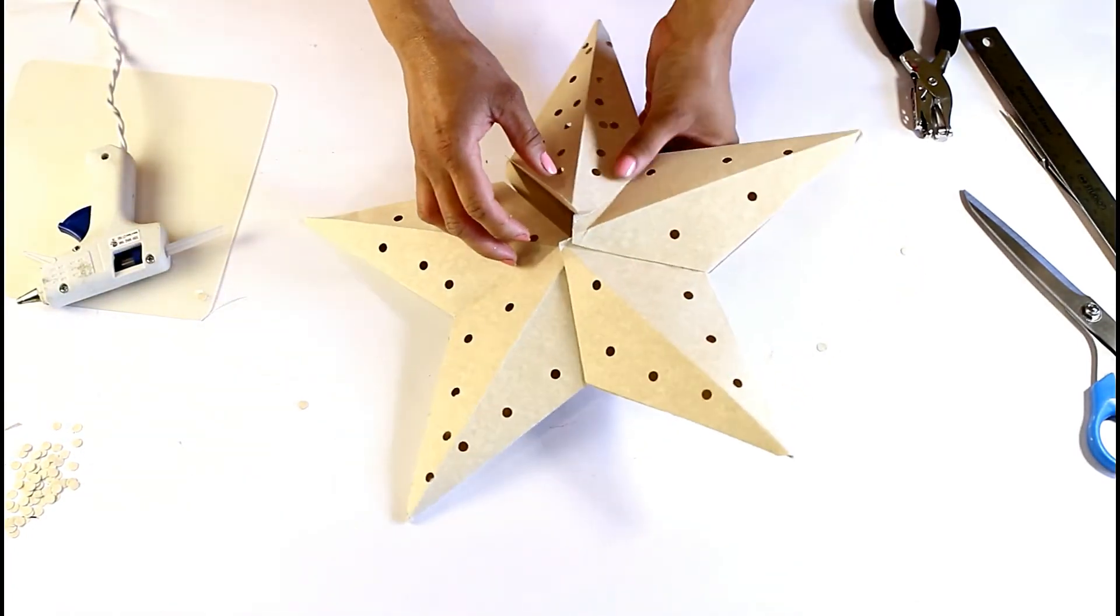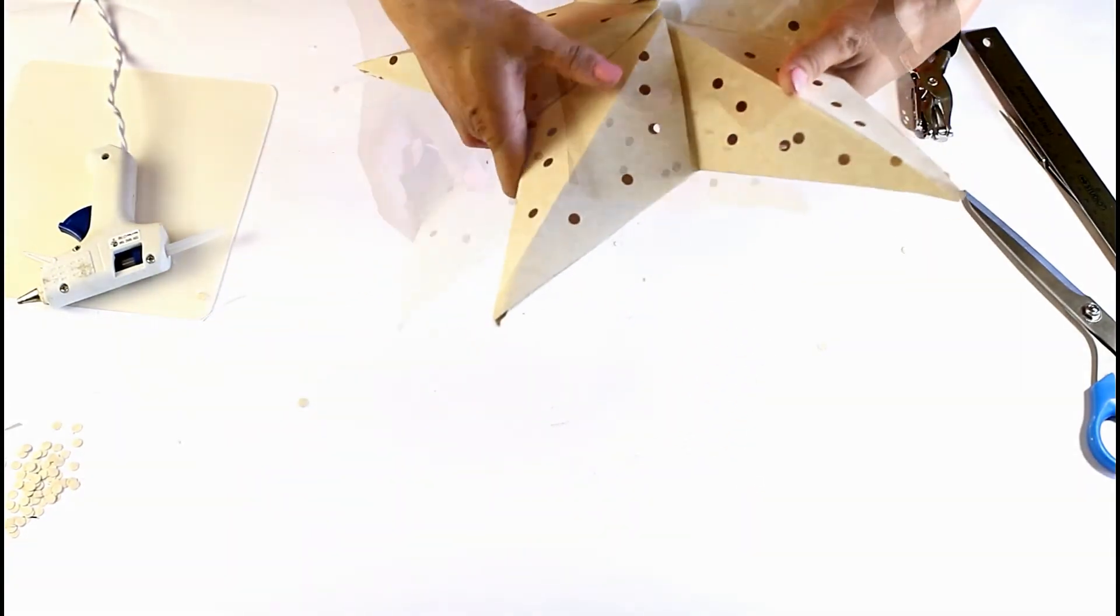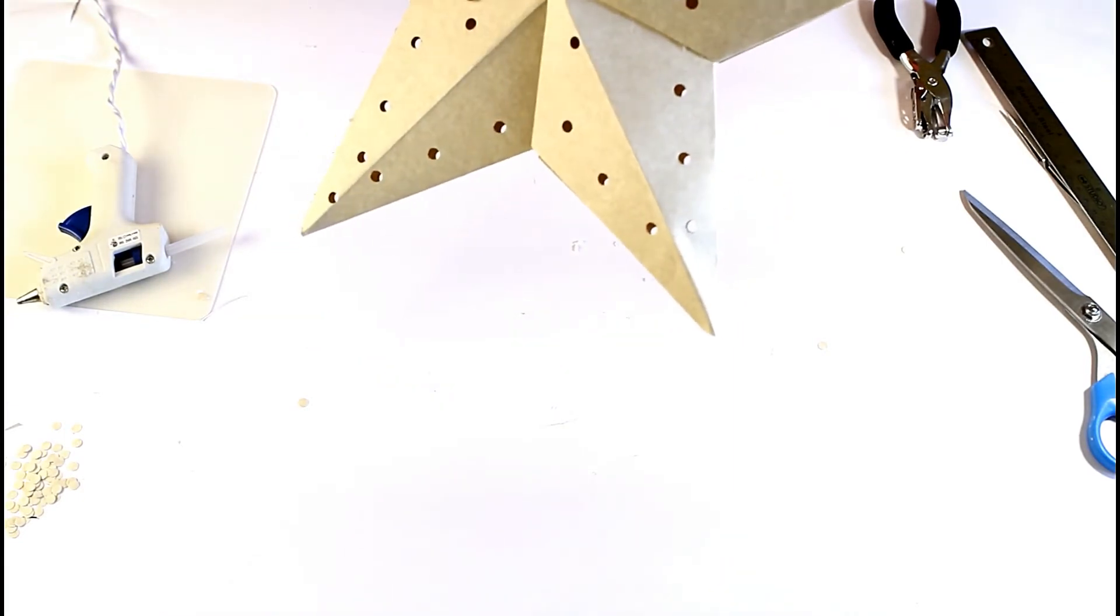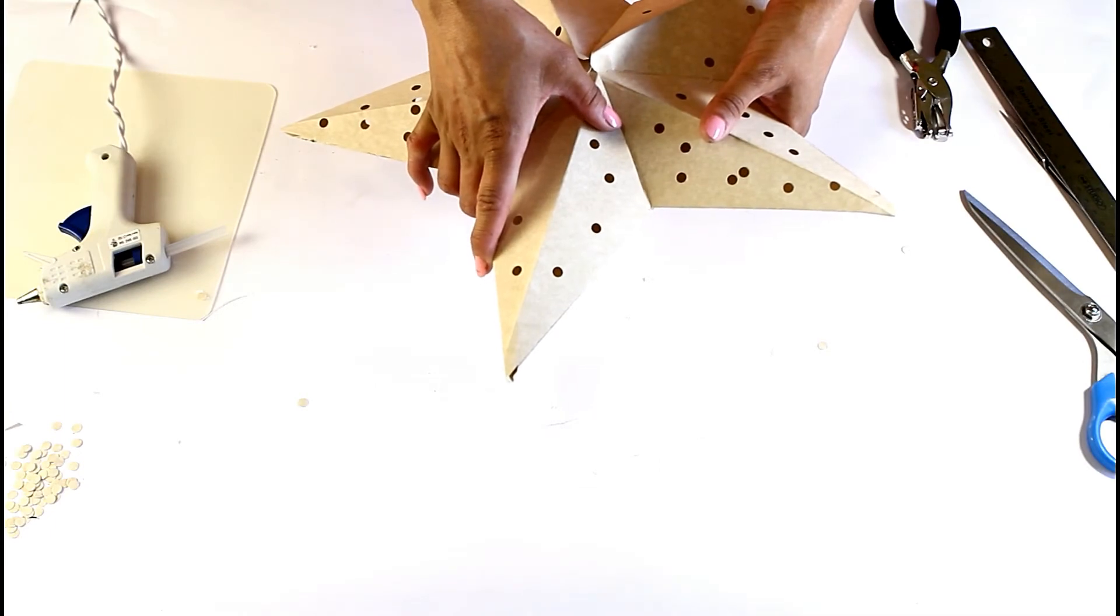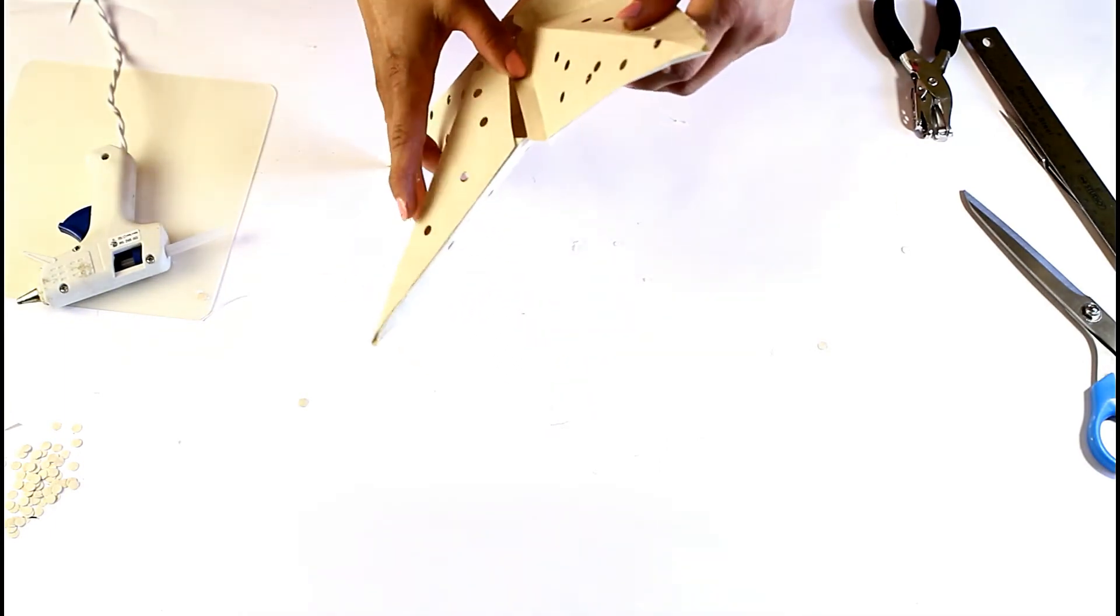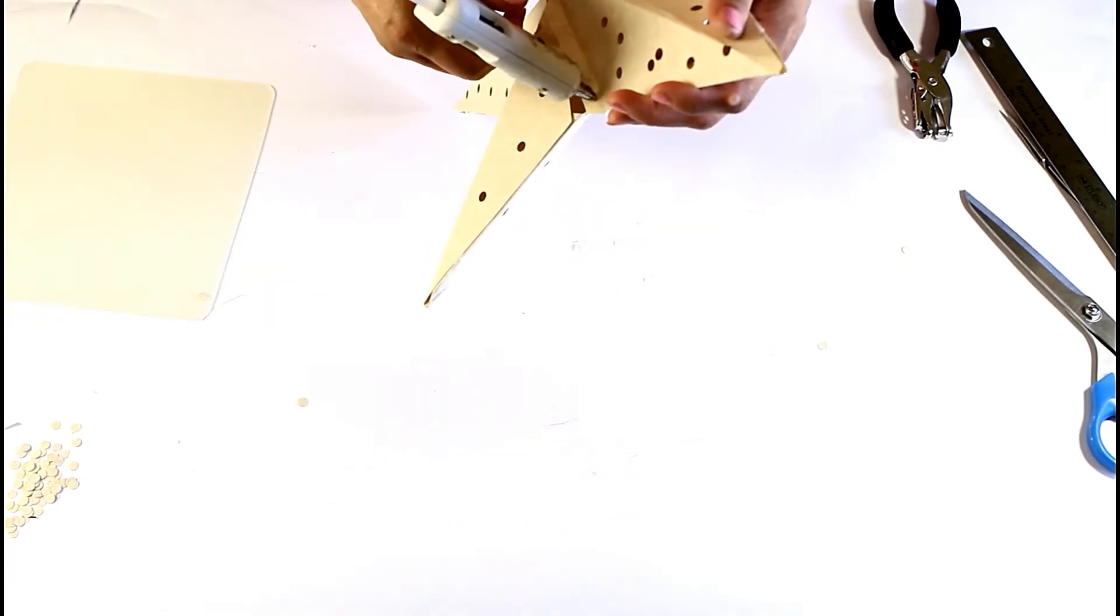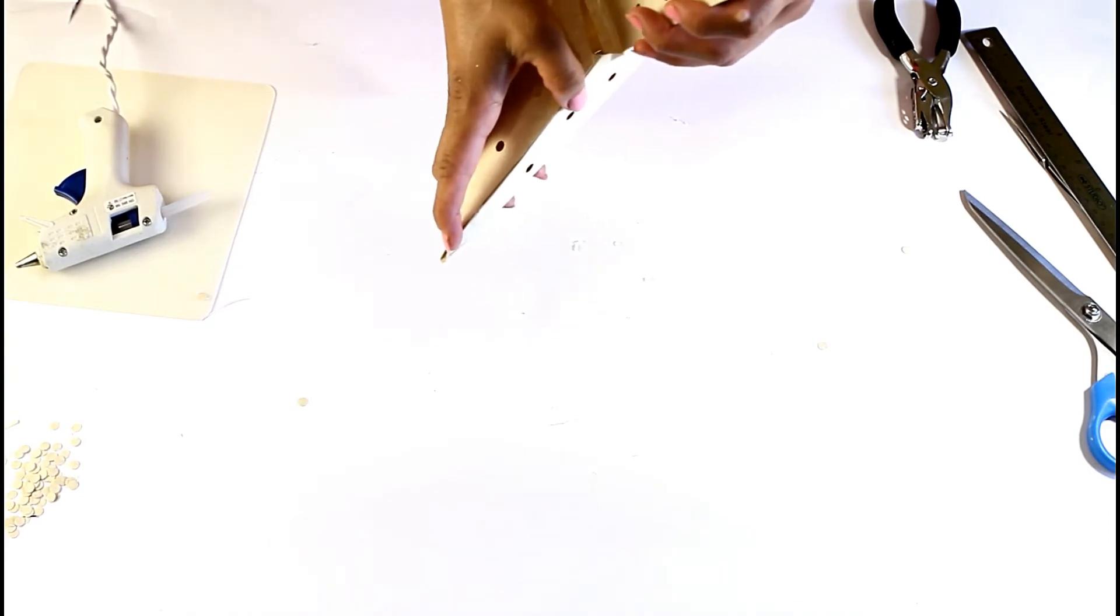Before I glue, if you're going to leave it like this, then by all means go ahead and glue this last flap into place. But I'm going to glue only one side of this. I'm going to glue this front side.